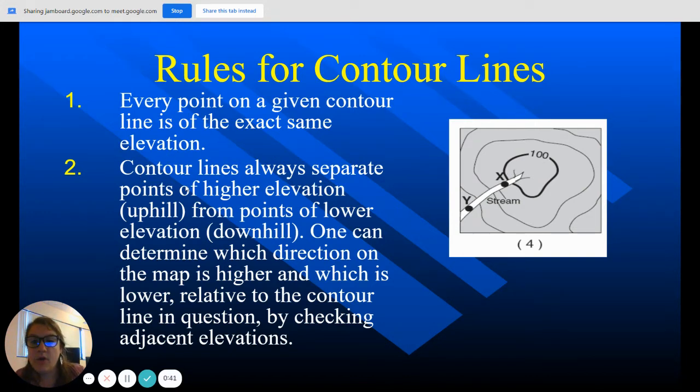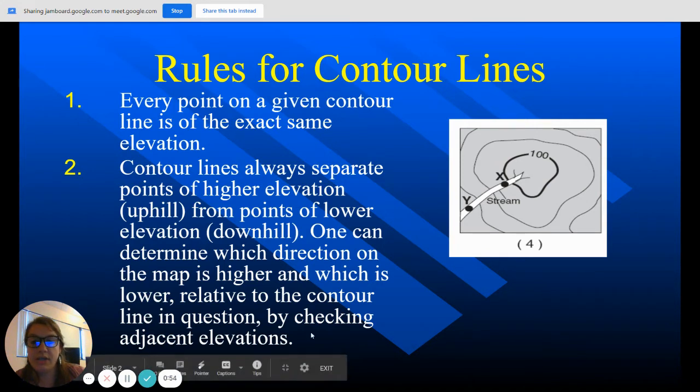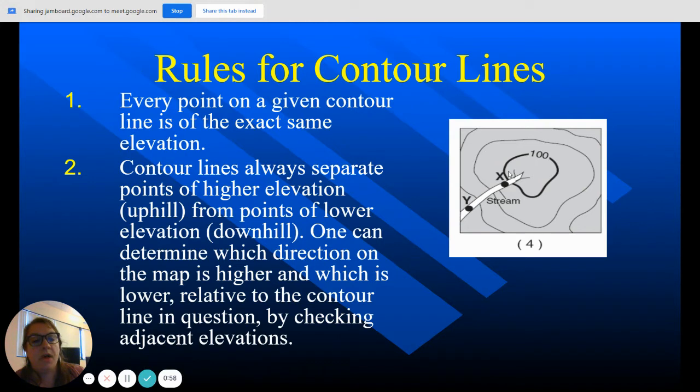Number two, contour lines always separate points of higher elevation, which can be uphill, from points of lower elevation, which is downhill. One can determine which direction on the map is higher and which is lower relative to the contour line in question by checking the adjacent levels. So sometimes on these maps, on this one it's too small, you can see that this is 100. Because this 100 kind of makes a circle, this is going to be the highest point, and everything below this is going to be smaller.